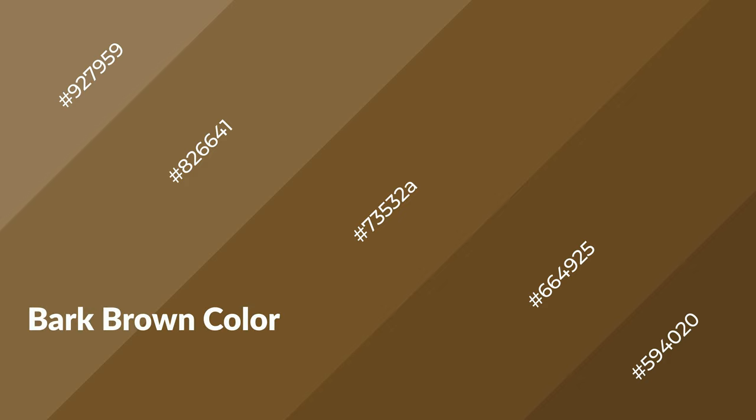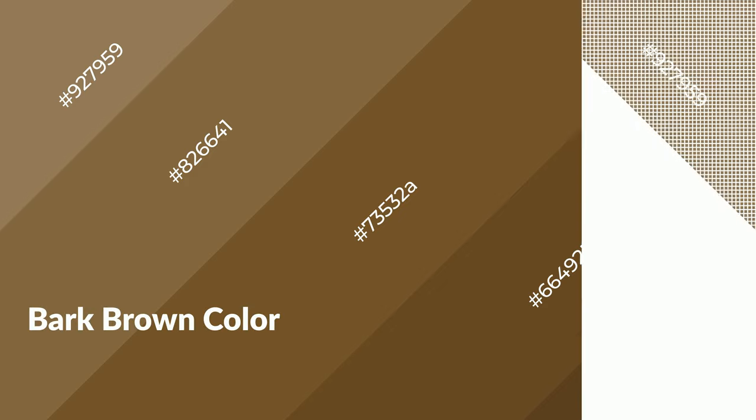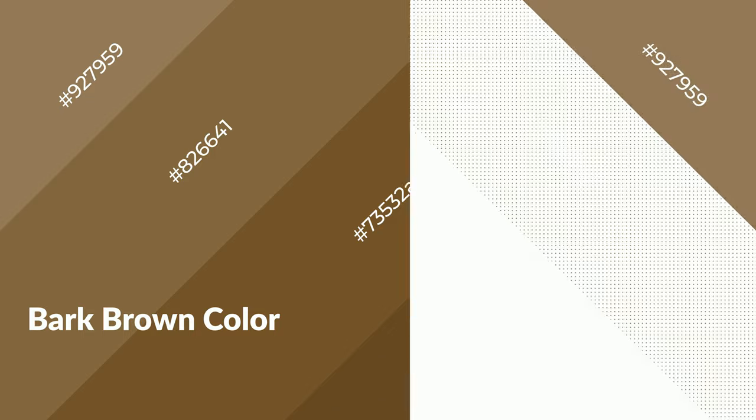To generate shades of a color, we add black to the color. Shades are used in patterns, 3D effects, and layers. Shades create depth and drama. Bark brown is a warm color and it emits cozier and active emotions.